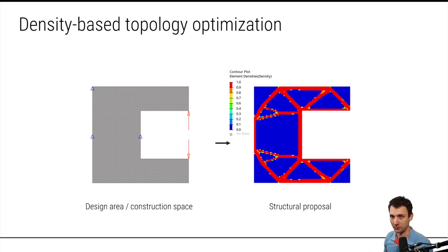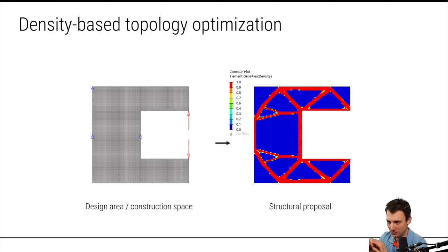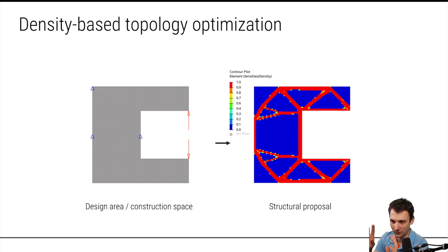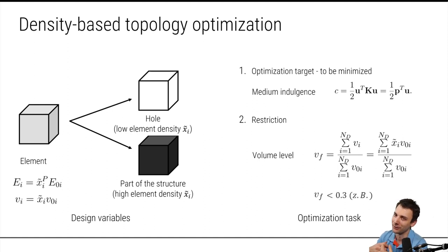What is topology optimization? You have your design space and your structural proposal. Topology optimization first discretizes your design space with elements. For each element, it tries to decide if it's part of the structure or not — if it's not, it's a void. It does this using a so-called density, which is not a physical density but acts like one because it scales different things. It scales the volume and also scales the stiffness. The stiffness of one element equals the density — the design variable — raised to the power of a penalty factor p, times the elastic modulus of the material. For steel this would be 210,000 MPa.